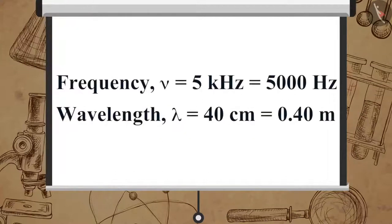Here, frequency nu is equal to 5 kilohertz is equal to 5000 hertz. Wavelength lambda is equal to 40 centimeters is equal to 0.40 meters.